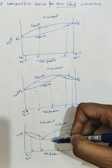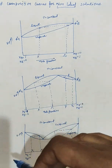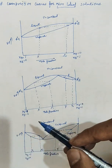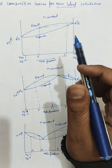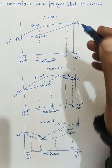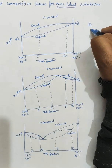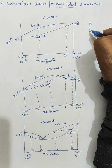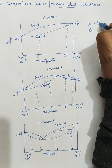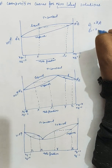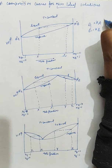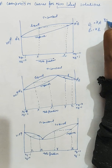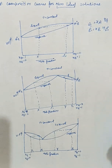Consider a binary solution containing components A and B. There are two components, so correspondingly their mole fractions in the liquid state will be x_A and x_B, and in the vapor state they will be y_A and y_B.